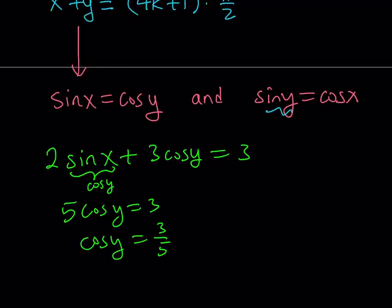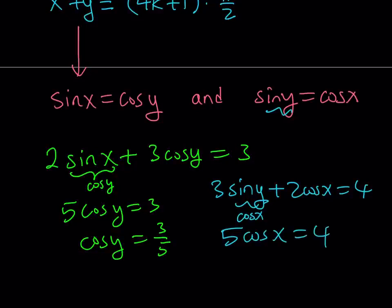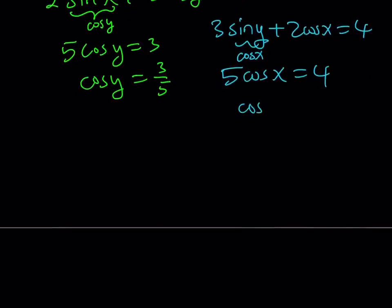Now, if you do something similar for the other one, for example, replace sine y with cosine x. And what was our original equation? Of course, we have to go to that first. So, that was 3 sine y plus 2 cosine x is equal to 4. So, in this equation, we can basically replace sine y with cosine x. So, we get 5 cosine x is equal to 4. And that just means that cosine x is equal to 4 fifths.